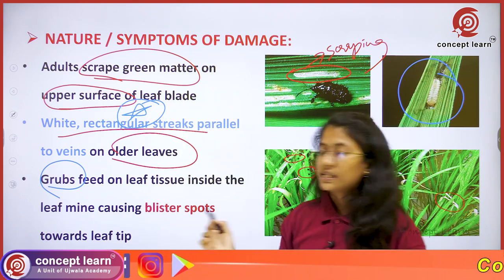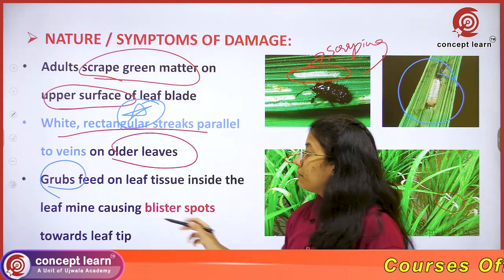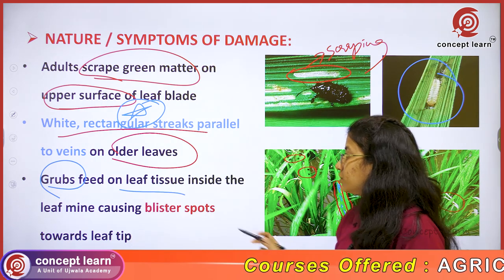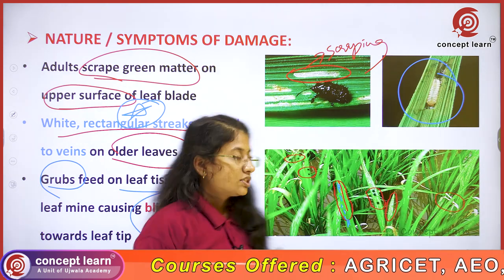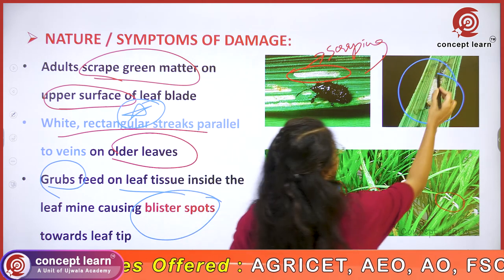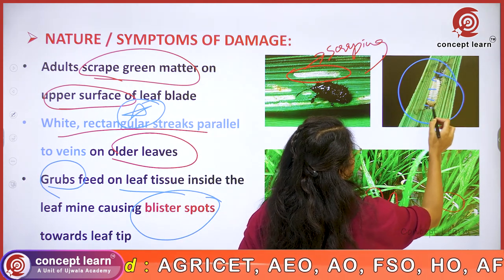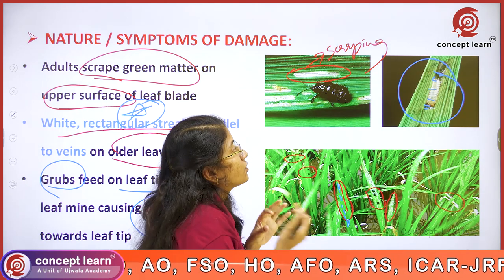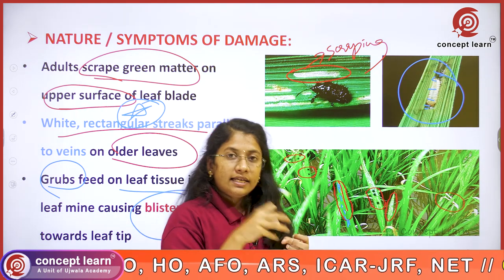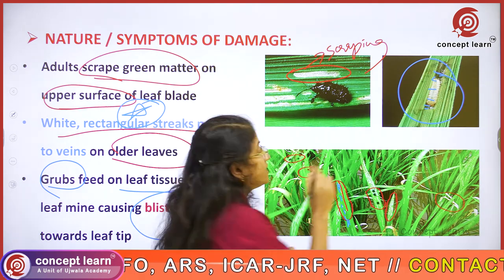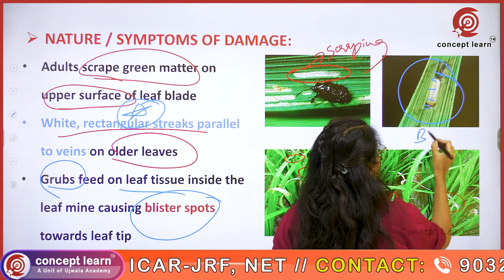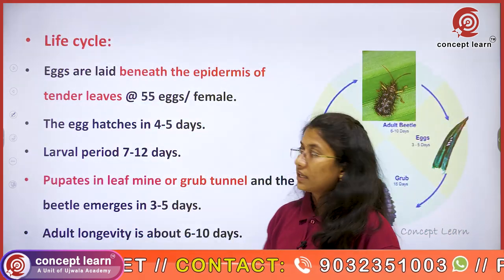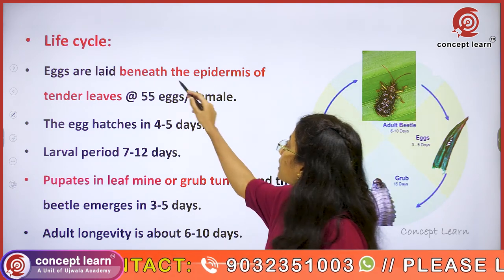The immature stage of the rice hispa is the grub, which feeds upon leaf tissues causing blister spots towards the leaf tip. The grub is usually covered by a membrane and is found within the leaf mine. As it feeds upon the leaf tip, it results in the formation of blister spots.